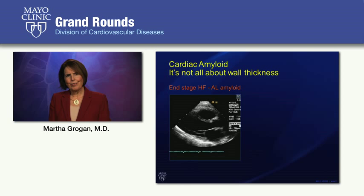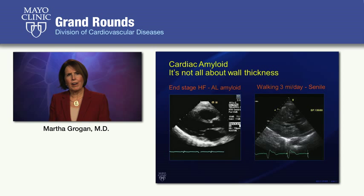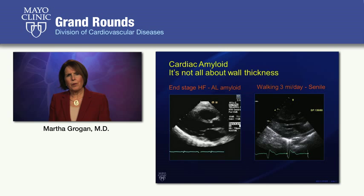It's not all about wall thickening. The patient with normal wall thickness had very severe heart failure due to AL cardiac amyloidosis and underwent a heart transplant within six months. Yet other patients, such as one walking three miles a day despite severe wall thickening with a septum measuring 28 millimeters, have senile cardiac amyloidosis. We need to understand what really causes organ dysfunction in amyloid.